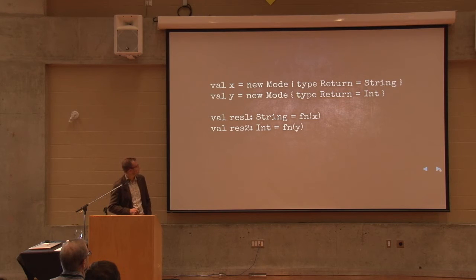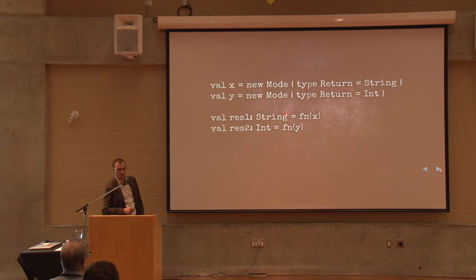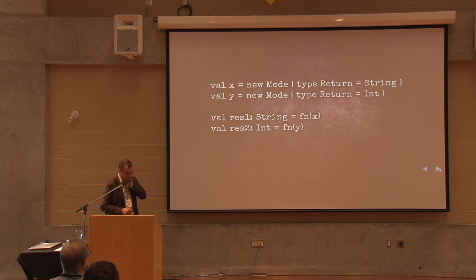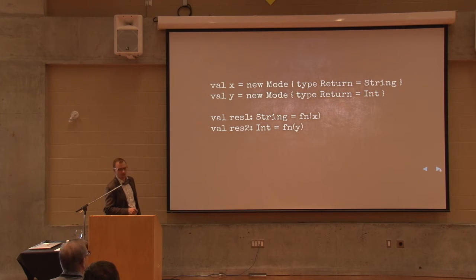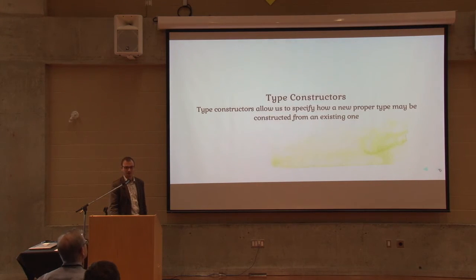Here's an example. We create two modes, x and y. One has a return type string, one has a return type int. For res1, we call fn with x and the return type will be string. For res2, this looks very similar except we have y — y has a return type of int, therefore we get an int. It would be a type error if we had string there. So these type prescriptions aren't changing anything — they're just there to illustrate the point. That's the first of the three features.